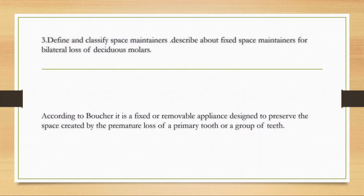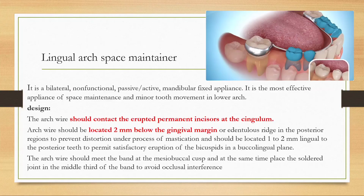The next question asks to define and classify space maintainers and describe fixed space maintainers for bilateral loss of deciduous molars. According to Bouchard, a space maintainer is a fixed or removable appliance designed to preserve the space created by the premature loss of a primary tooth or group of teeth. Classification has already been covered.